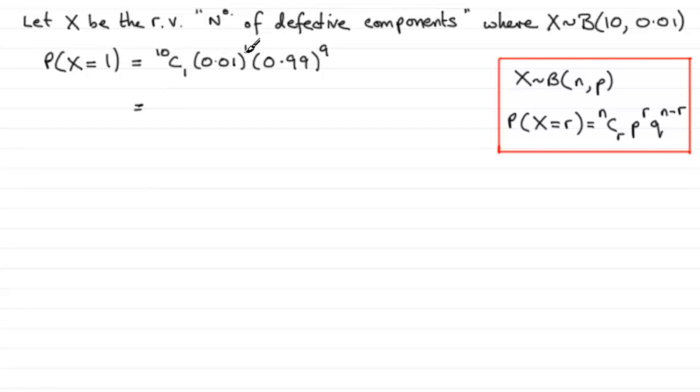You should know nC1 is always the value n. That would be 10 times 0.01 to the power 1 times 0.99 to the 9, which gives 0.091351 and so on. If we round this to 4 decimal places, that will give us 0.0914. That's how we do the first part.